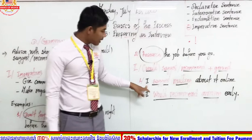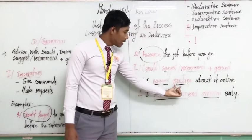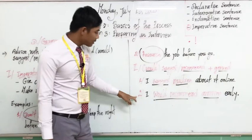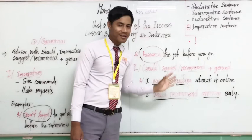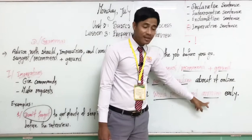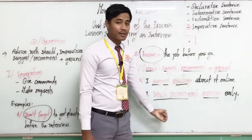Again, example one: 'I suggest reading about it online' — 'suggest' is the verb always followed by a gerund. Example two: 'I would recommend arriving early.' Look at 'arriving' — it is a gerund, and 'recommend' is the verb used to give a recommendation. The word 'would' in brackets means it is optional — you can use it or not, it is still correct.